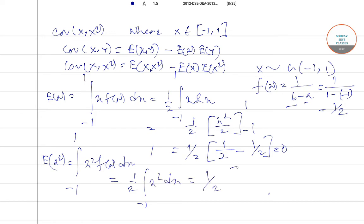So 1/2[x³/3] from -1 to 1, which is 1/2 of 1/3 minus -1/3, so 1/2 of 2/3, which is 1/3.